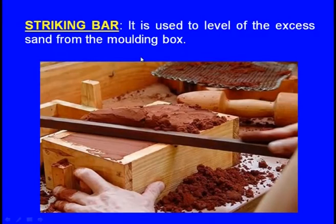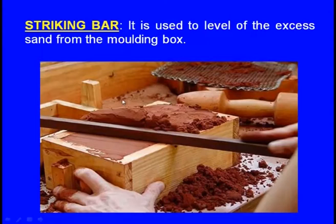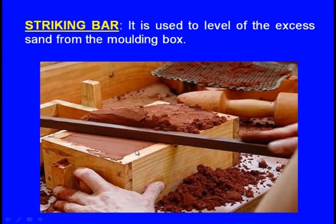Next, striking bar: after moulding the sand inside the moulding box, there will be excess sand above the moulding box. This excess sand must be removed by striking it out. The striking bar is used to level off the excess sand from the top of the moulding box.